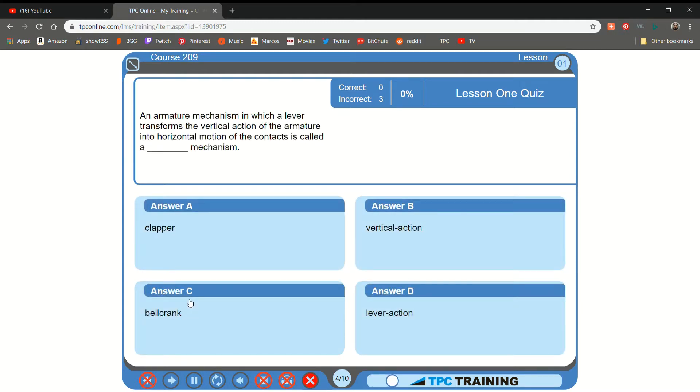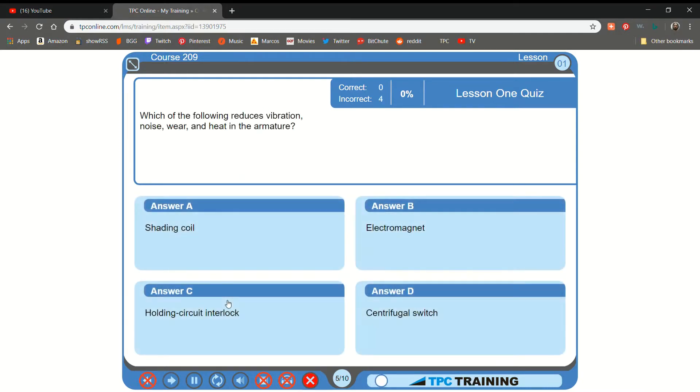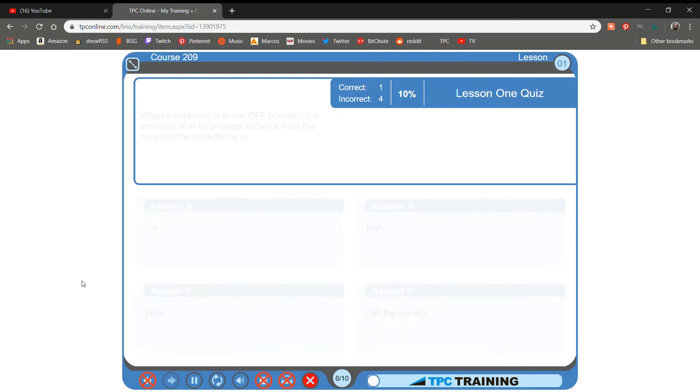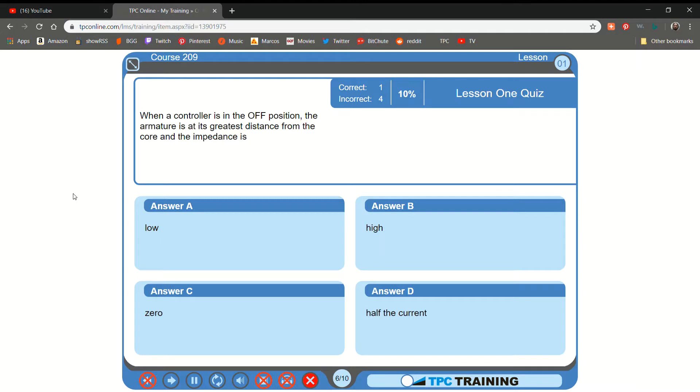An armature mechanism in which a lever transforms the vertical action of the armature into horizontal motion of the contacts is called a... A. Low... B... That is not correct.